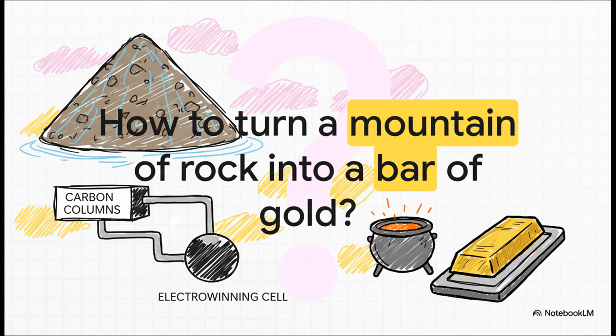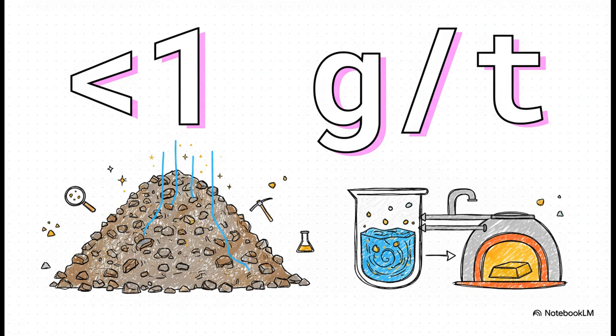all comes down to a surprisingly elegant, massive chemical process. And here's the part that really gets me. We are talking about concentrations of less than one gram of gold per ton of rock. Okay, to put that in perspective, for every thousand kilograms of rock that gets moved, they're looking for an amount of gold that weighs less than a single paperclip. It's totally invisible. So pulling it out? Well, it's a modern marvel.